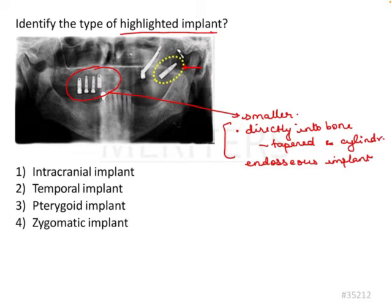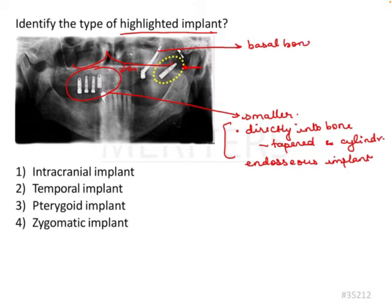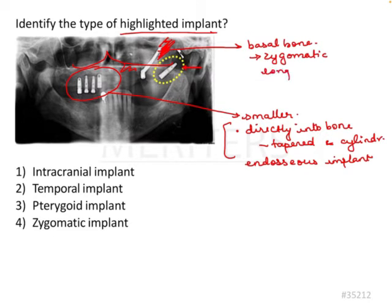Secondly there is this long implant. See, this is your maxilla over here, so this is definitely not going into the maxilla — it's going into the basal bone of some other bone. These are some basal kind of implants. The bone over here is the zygomatic bone. These are longer implants as we can see.